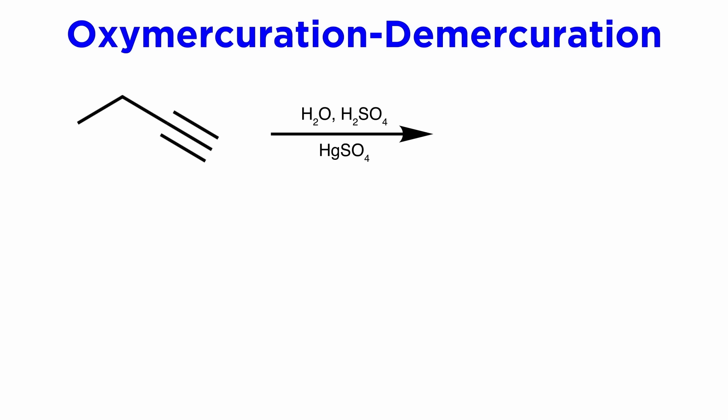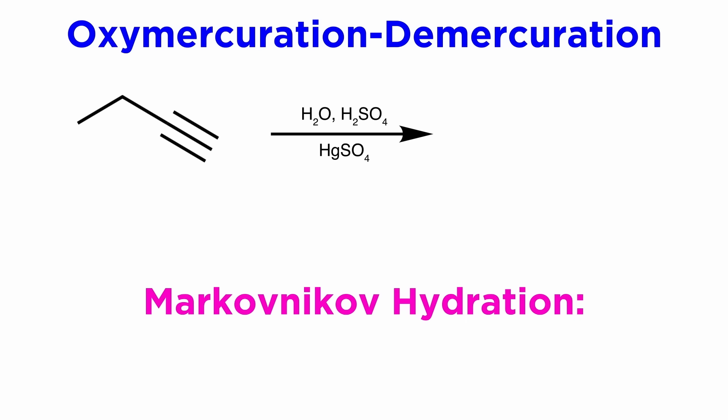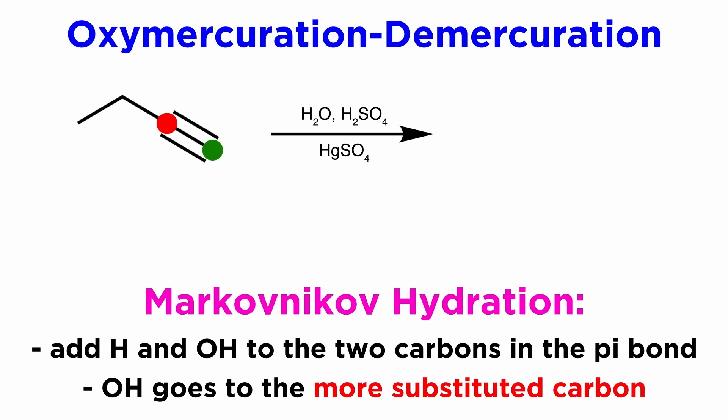One method for hydrating an alkyne is to use aqueous acid in the presence of mercury(II) sulfate as a Lewis acid catalyst. This will result in a Markovnikov hydration, leaving a hydroxyl on the more substituted carbon of the two, if applicable.